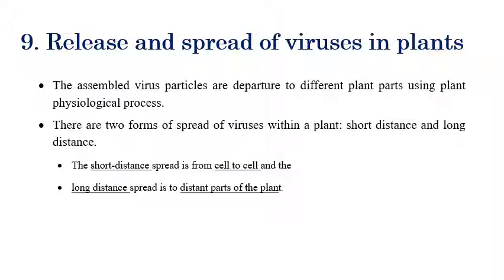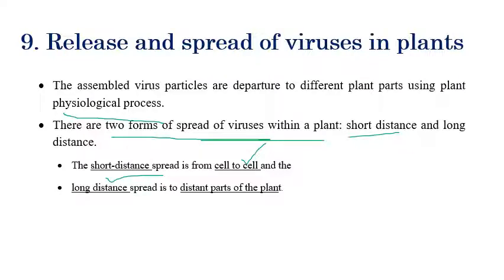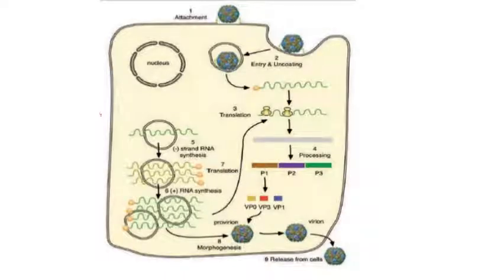After assembly, the release and spread of virus particles into the plant system occurs. The assembled components — amino acids and protein coats — are transported to different plant parts using physiological processes. There are two forms of spread: short distance, which is cell-to-cell spread, and long distance, in which plant viruses are transported to different parts of the plant, such as from roots to shoots or to leaves and other plant parts.